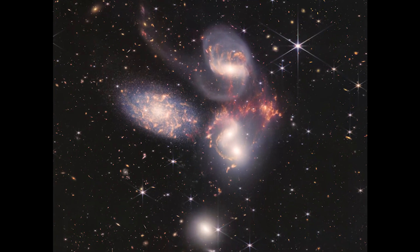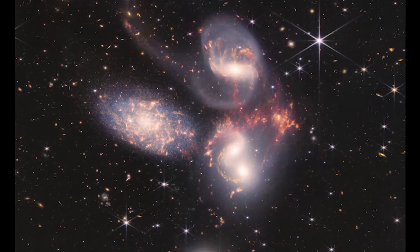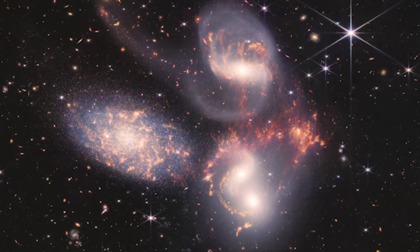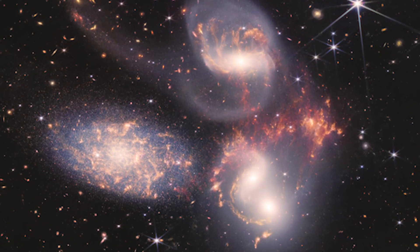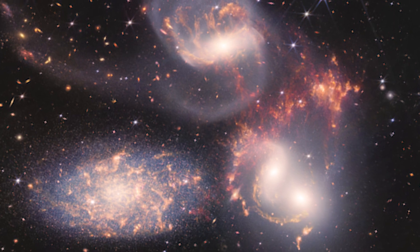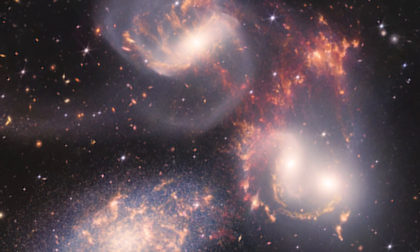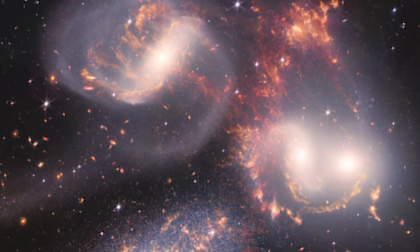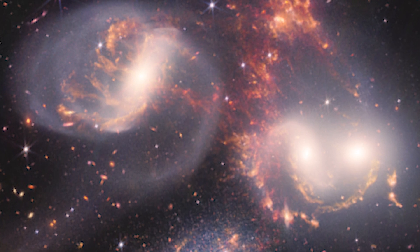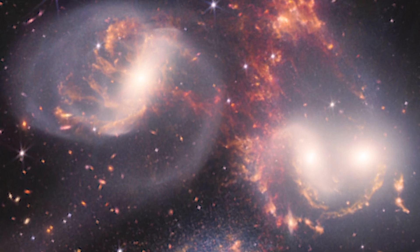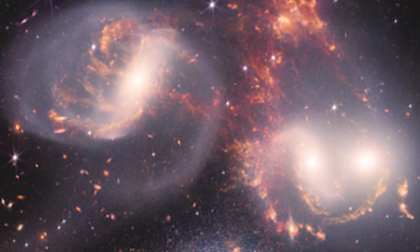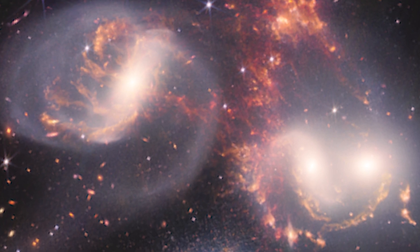But as the James Webb Space Telescope and ALMA dug deeper, they uncovered something truly unexpected. The shockwave was caused by the collision of an intruder galaxy known as NGC-7318B with Stephan's Quintet. At a speed of 1.8 million miles per hour, this intruder is plowing through the Quintet and forcing its way into the group.